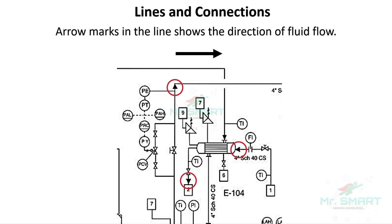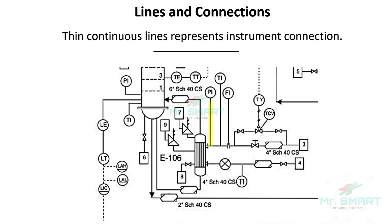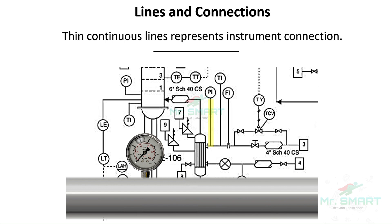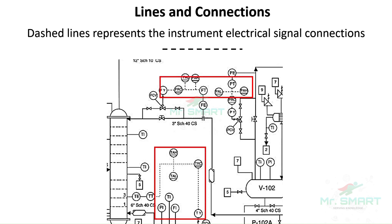Have you noticed the arrow marks over the lines? These arrow marks show the direction of fluid flowing inside the pipe. The thin continuous lines in the P&ID represent the instrument connection with pipes or equipment. In some cases, these lines will not be comparatively thin, as the instrument connections are also done in the form of piping. A continuous dashed line in a P&ID represents instrument electrical signal connections. These instruments are connected only with electrical signal wires, and there is no physical piping connection between them.